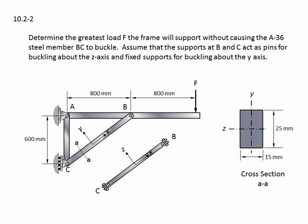Problem 10.2-2. Determine the greatest load F the frame will support without causing the A-36 steel member BC to buckle. Assume that the supports at B and C act as pins for buckling about the Z-axis and fixed supports for buckling about the Y-axis.